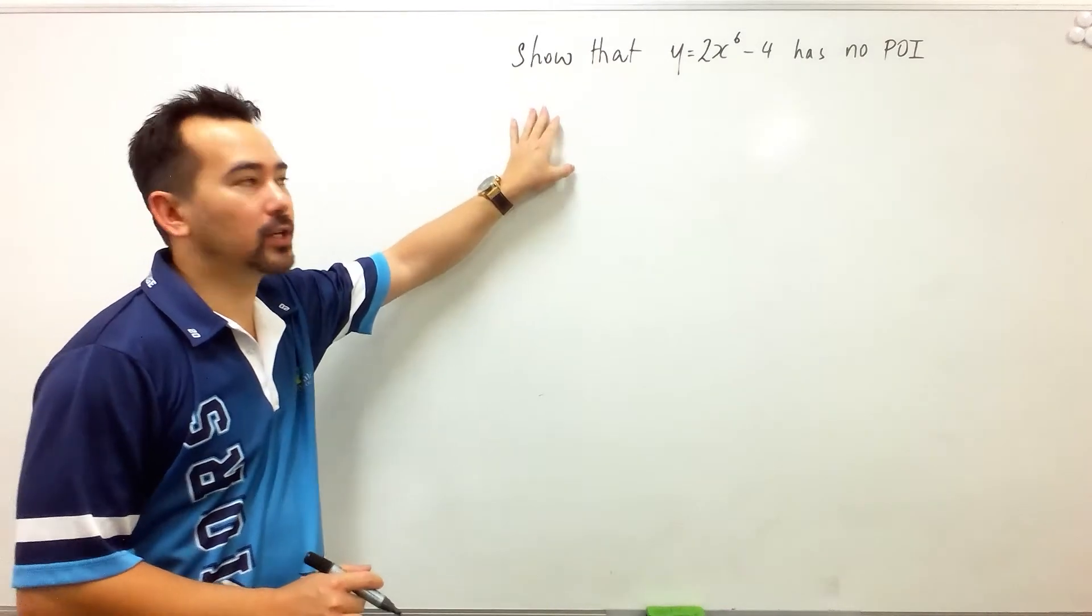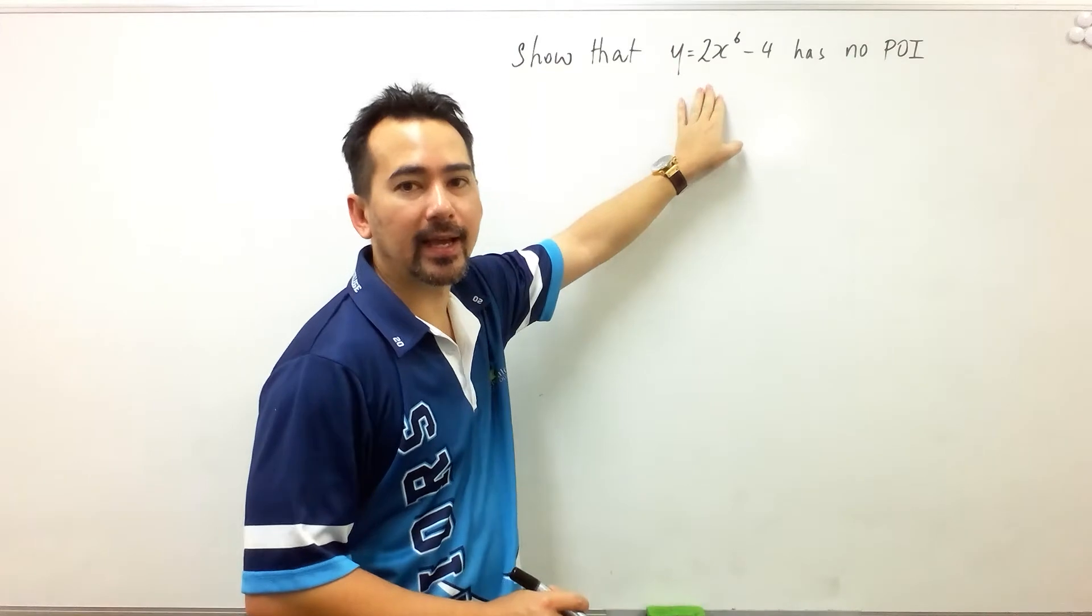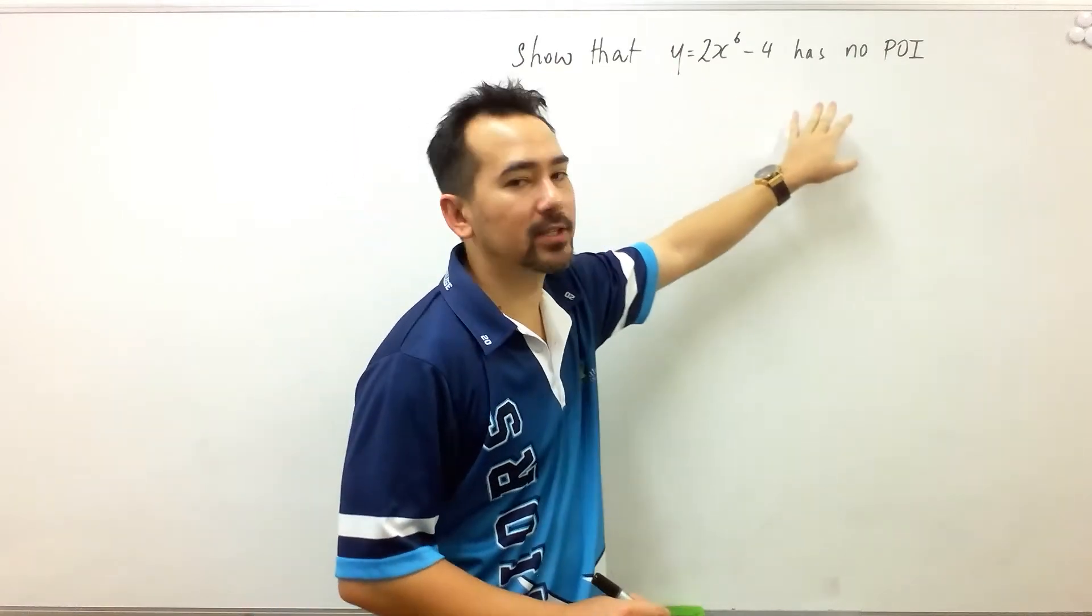Let's have a go at this question where we're going to show that y equals 2x to the power 6 take away 4 has no point of inflection.